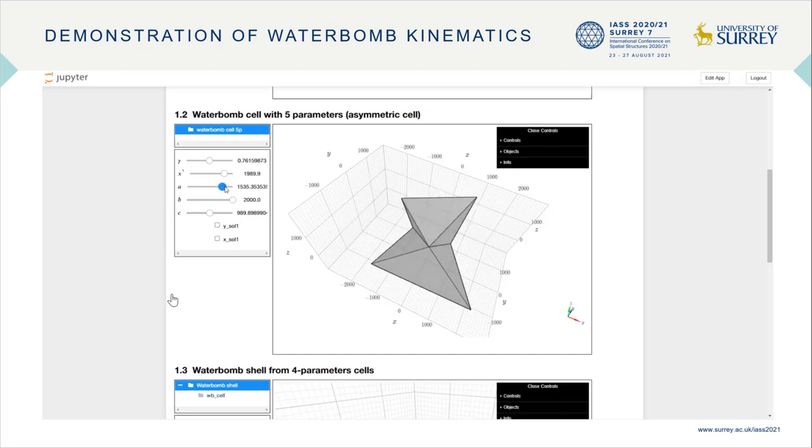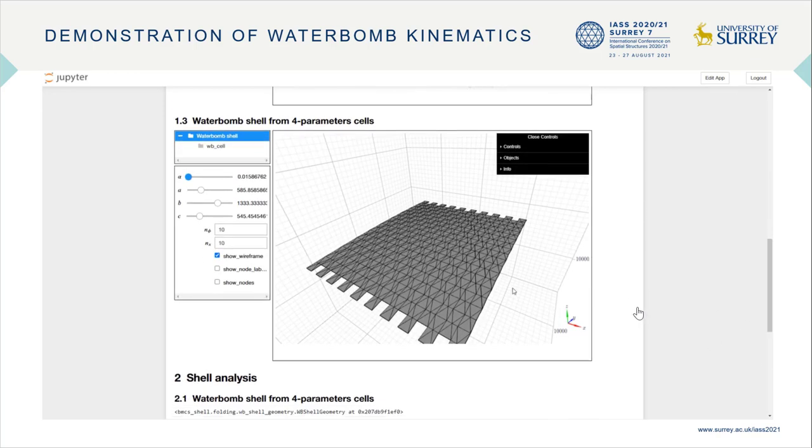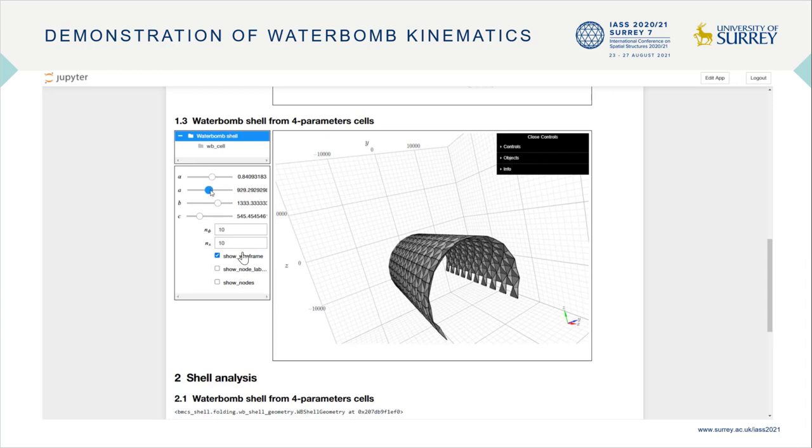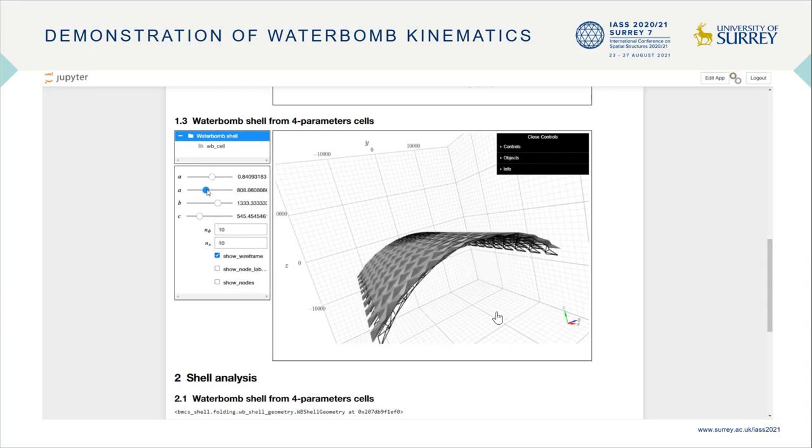And also some other parameters like a. And because of the closed form solutions, we can instantly see the effect of changing the set parameters on the global shape of the shell.